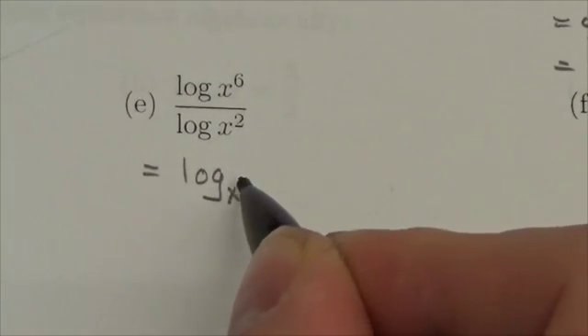In fact this is a different rule altogether and this is the change of base rule so this becomes log base x squared of x to the sixth.